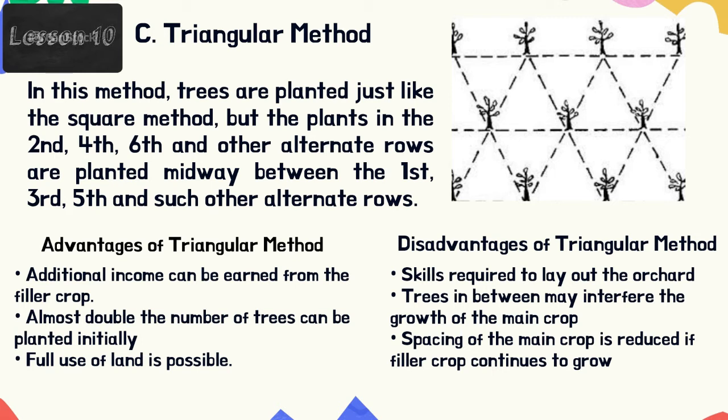Advantages of the triangular method: additional income can be earned from the filler crop; almost double the number of trees can be planted initially; and full use of land is possible. Disadvantages: skill is required to lay out the orchard; trees in between may interfere with the growth of the main crop; and the spacing of the main crop is reduced if the filler crop continues to grow.